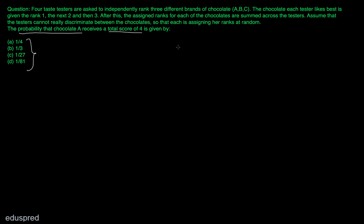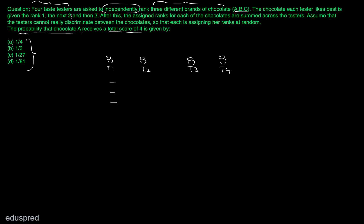Let's take a look at the information that's given to us. In total, we have four taste testers — tester 1, tester 2, tester 3, and tester 4. And we have three brands of chocolate, A, B and C. These testers are ranking the brands of chocolates independently, meaning whatever rank tester 1 gives to the chocolates has nothing to do with the ranks that other testers have given. After the ranking is complete, we sum the ranks for each of the chocolates to get the score of a particular chocolate.